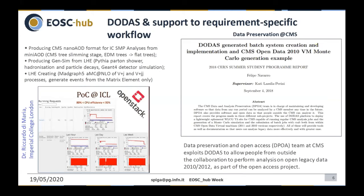A couple of interesting examples of researcher-specific activities: a researcher with a requirement-specific workflow needing specialized hardware access on infrastructure. On the left, Imperial College London used DODAS for production and generation of specific events in the CMS experiment scope, around end of 2018. In the same period, the Data Preservation and Open Access group exploited DODAS combined with the REANA project, provisioning open legacy data to people outside the experiment to process and access this open data.